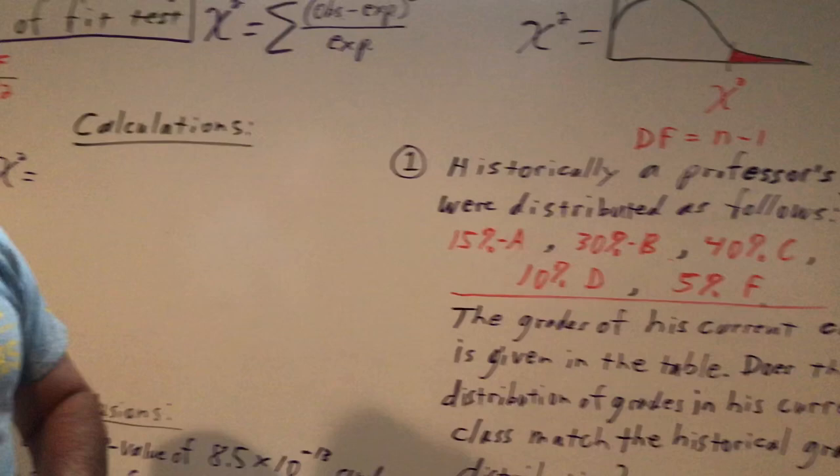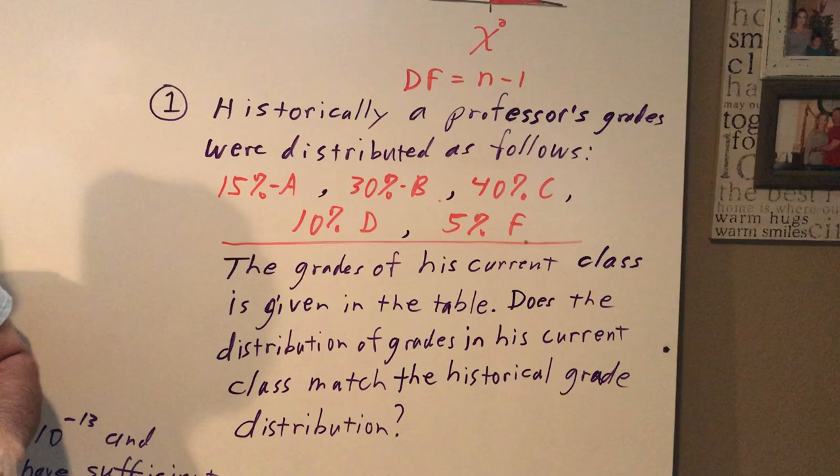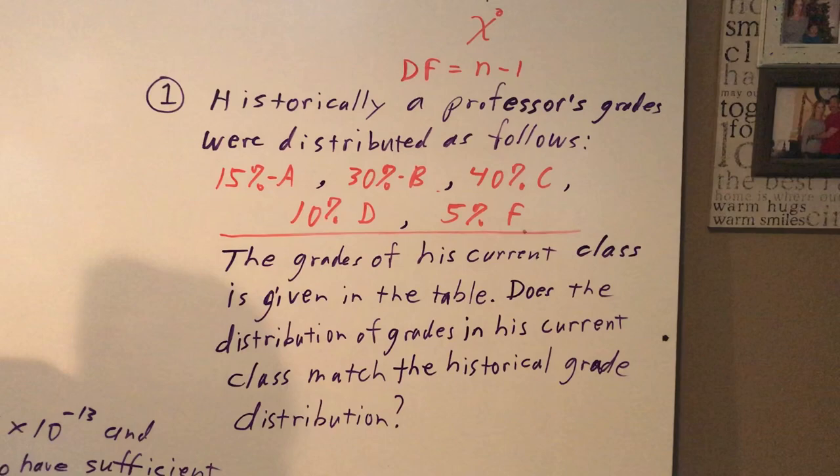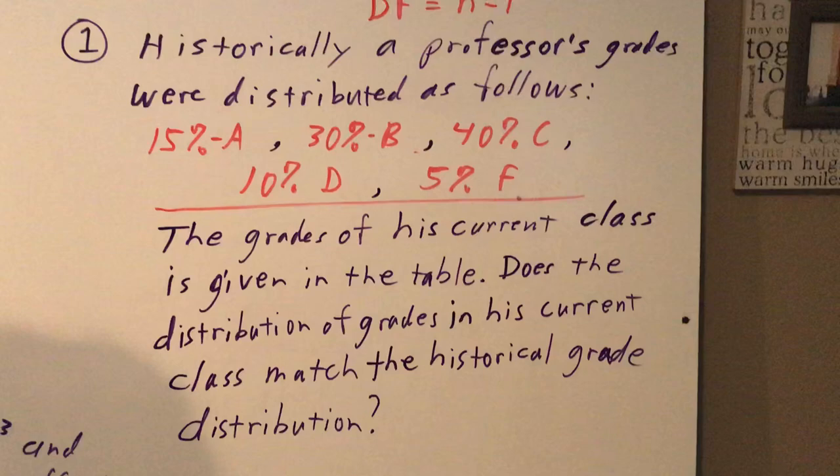Here's our problem for the day. Historically, a professor's grades were distributed as follows: 15% A's, 30% B's, 40% C's, 10% D's, and 5% F's. The grades of his current class are given in the table. Does the distribution of grades in his current class match the historical grade distribution?